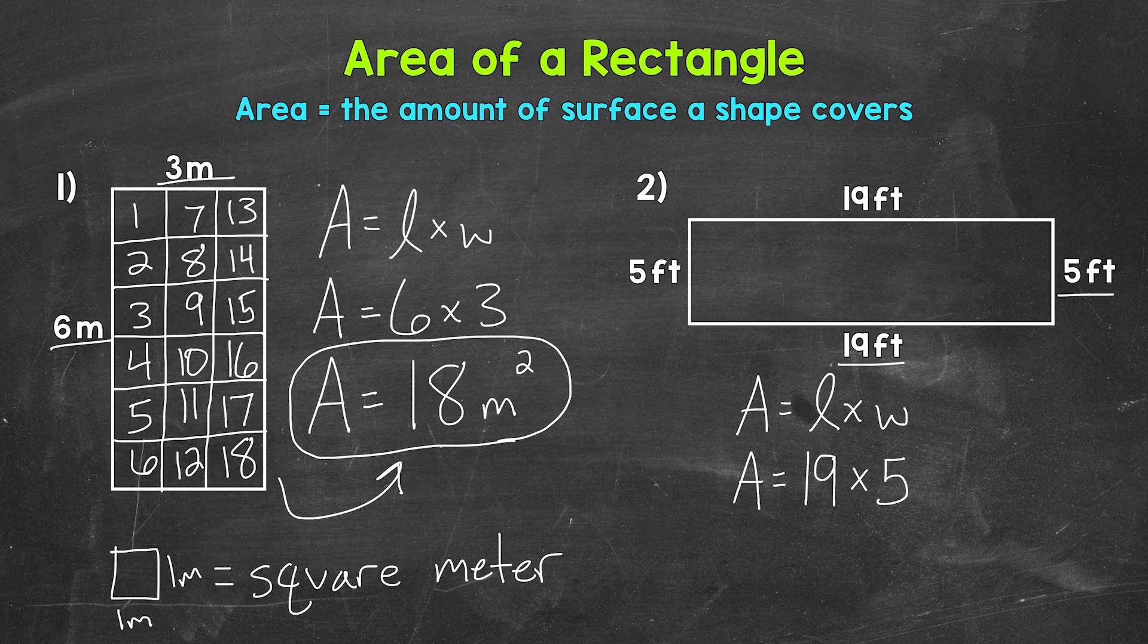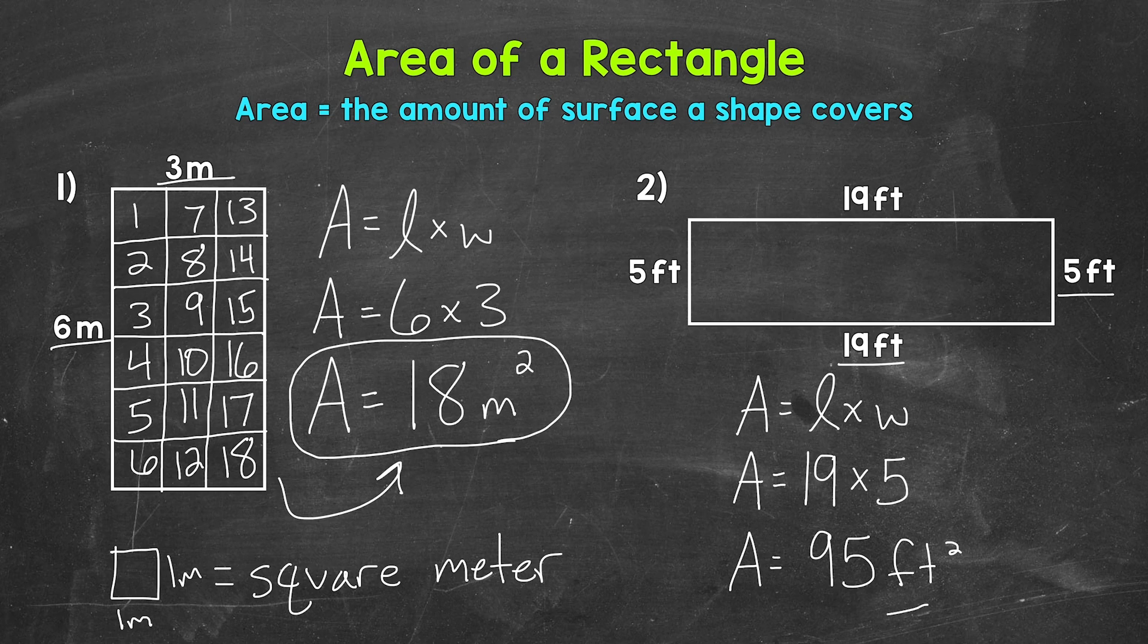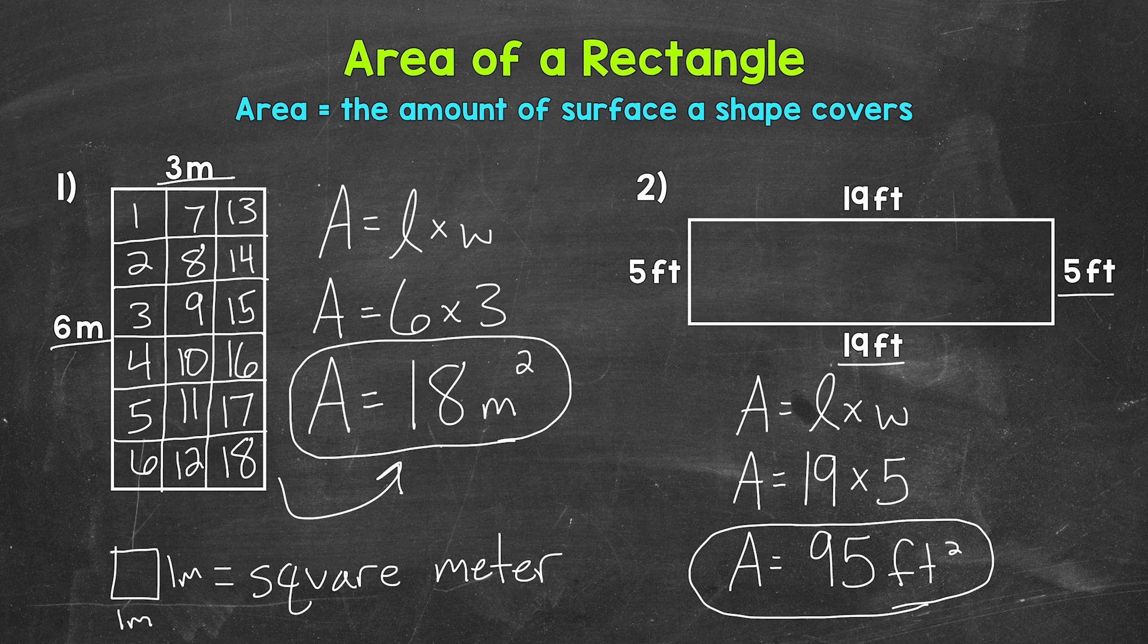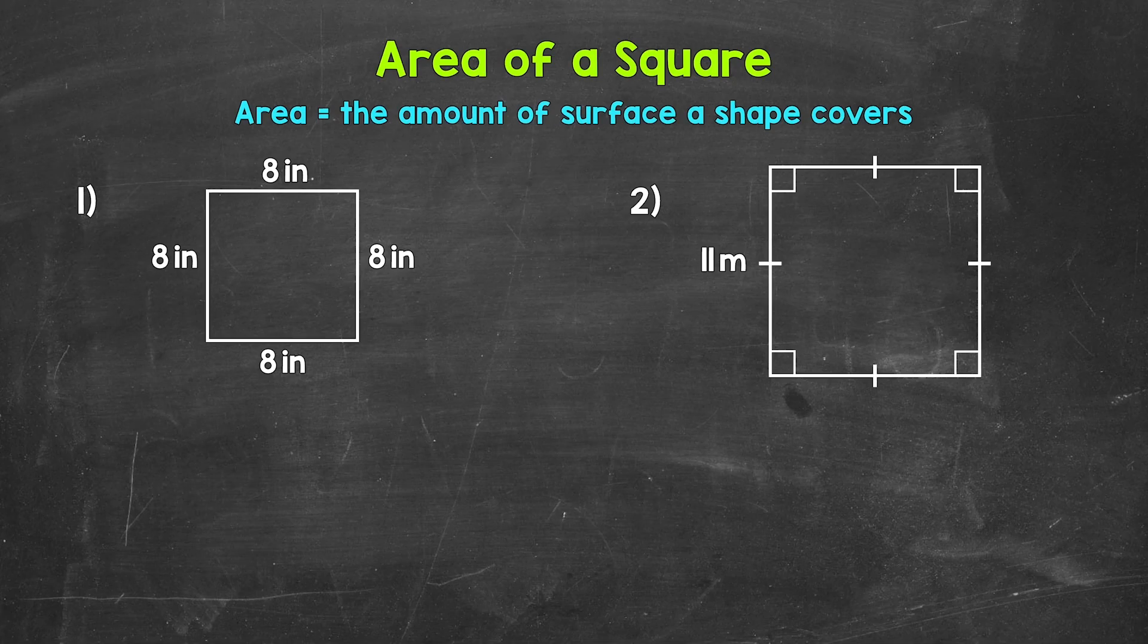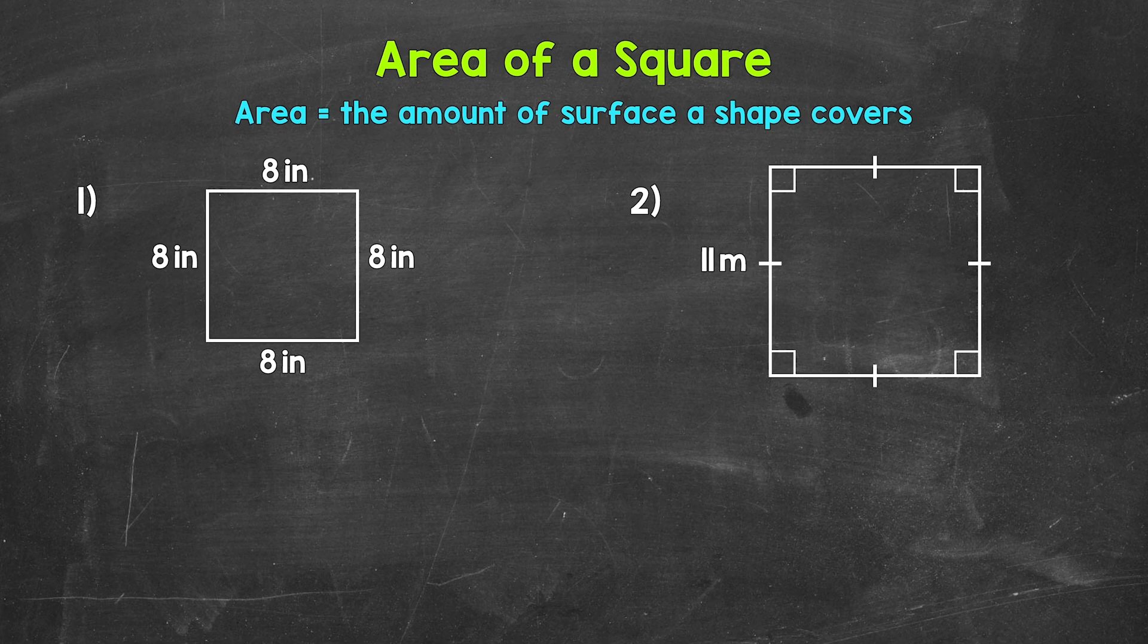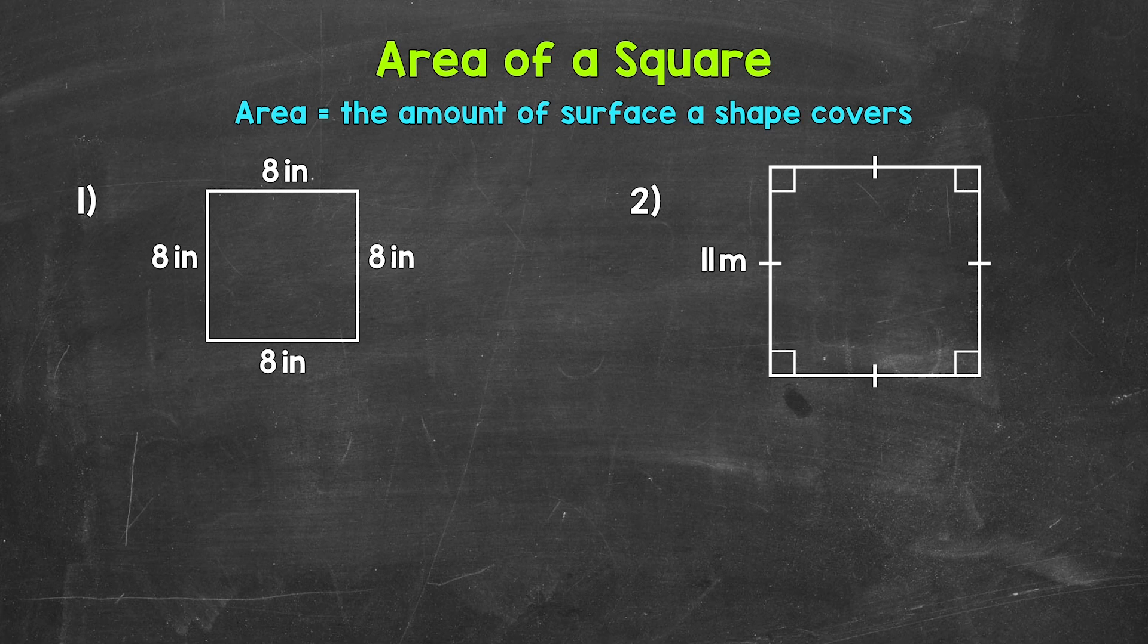Now we can multiply. So 19 times 5 gives us an area of 95 square feet. So there's how to find the area of a rectangle. Let's move on to finding the area of a square.